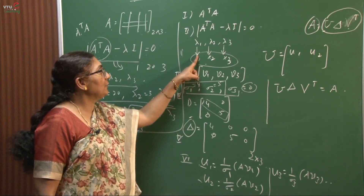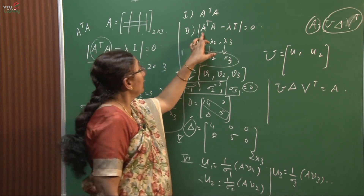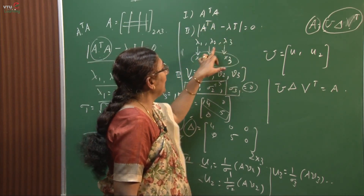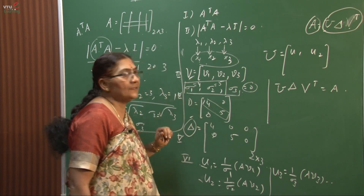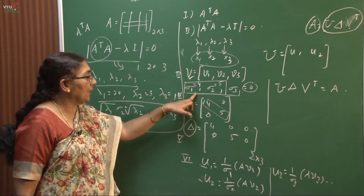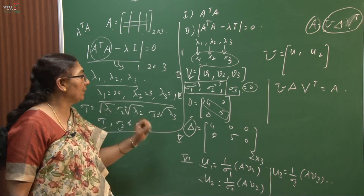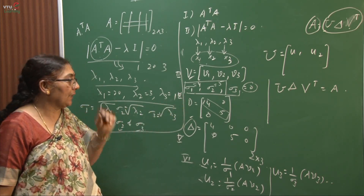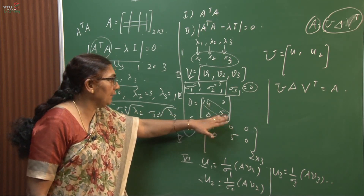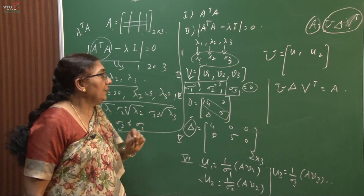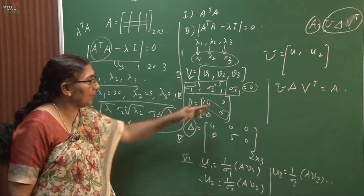With A transpose times A, you find the eigenvalues and eigenvectors. The eigenvectors form the columns of V, arranged in decreasing order of eigenvalues. The square roots of the eigenvalues in decreasing order are the singular values sigma 1, sigma 2, sigma 3. Then frame D as a diagonal matrix whose principal diagonal entries are the non-zero singular values.